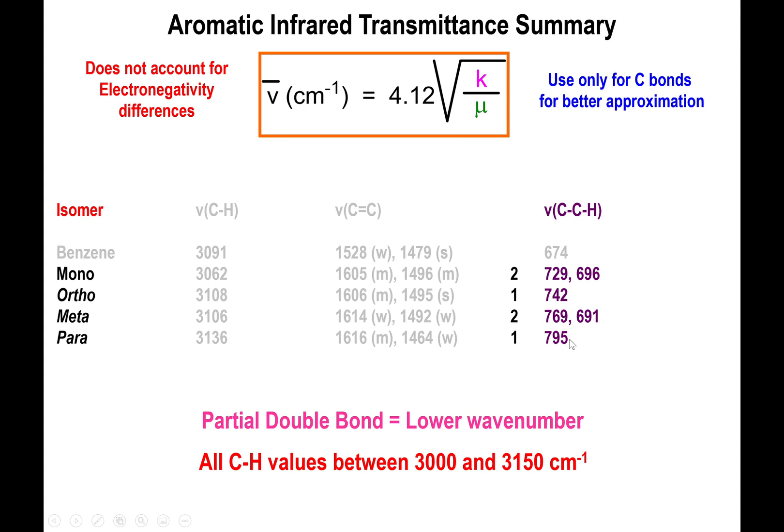And then the para substitution, the 1,4 positions, this only gives you one peak close to 800. And the way I kind of remember this starting from the mono substitution is that you have 2, 1, 2, 1, right? So two peaks, one peak, two peaks, one peak. So I remember this as my forever 21.